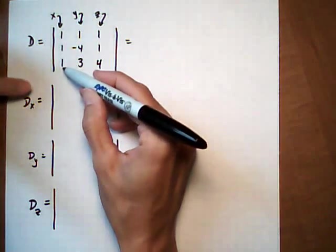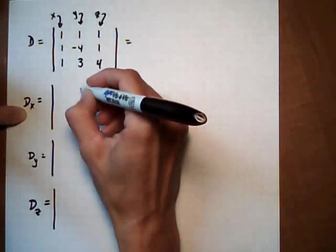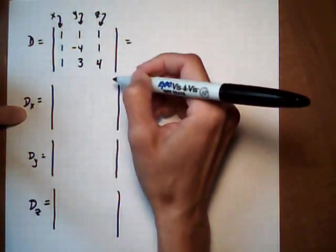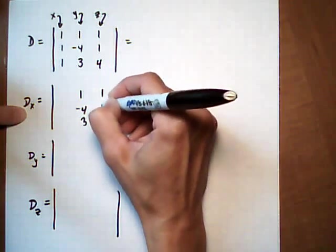What we're going to do is leave this x column blank because we have Dx. But we're going to fill in exactly what we see up top for y and z. 1, minus 4, 3, 1, 1, 4.